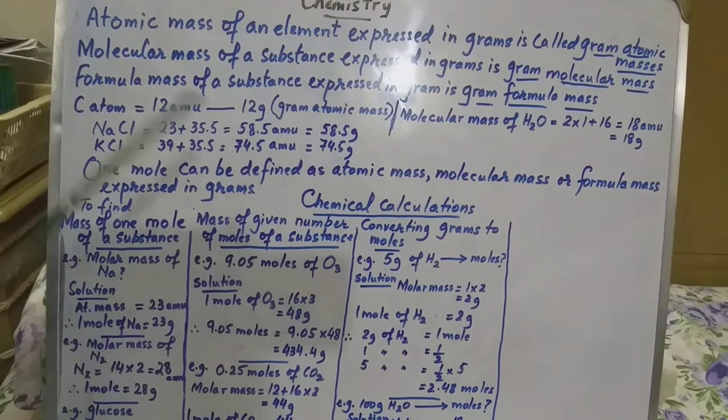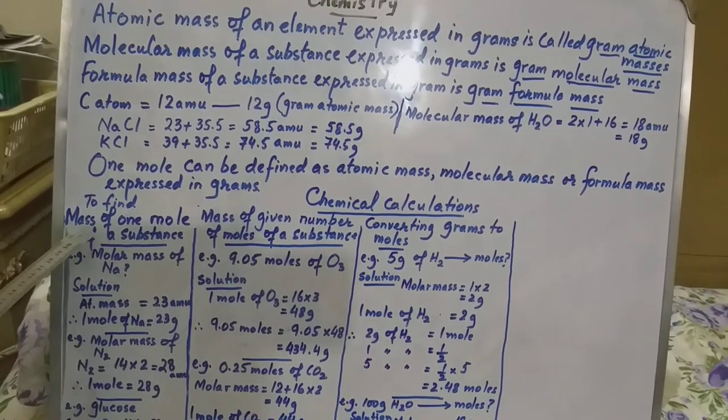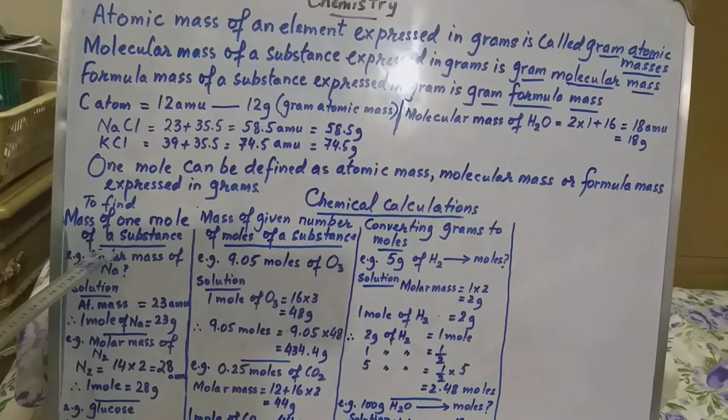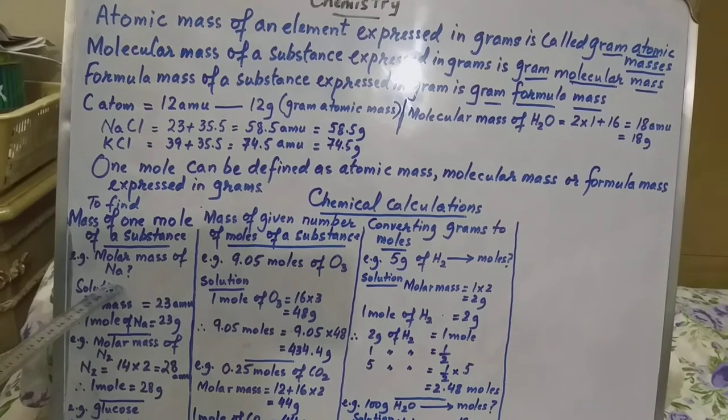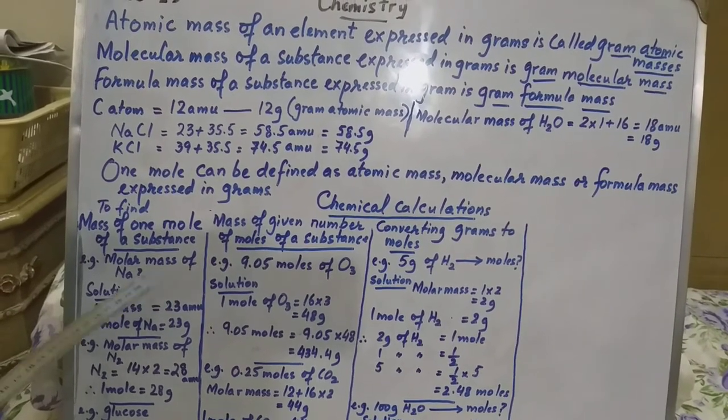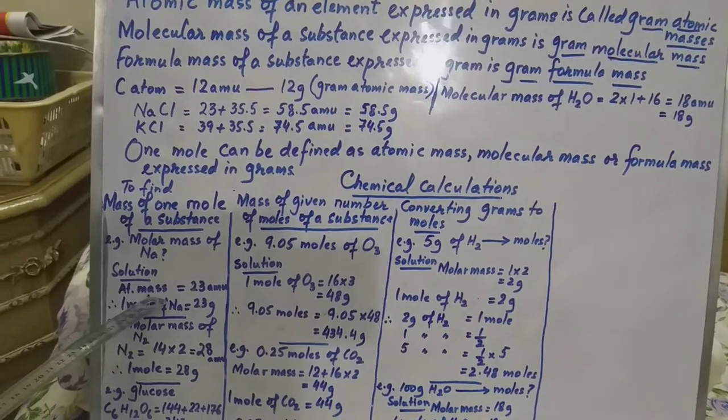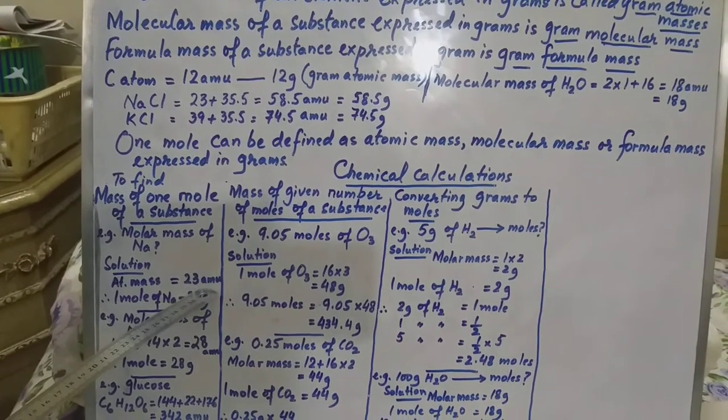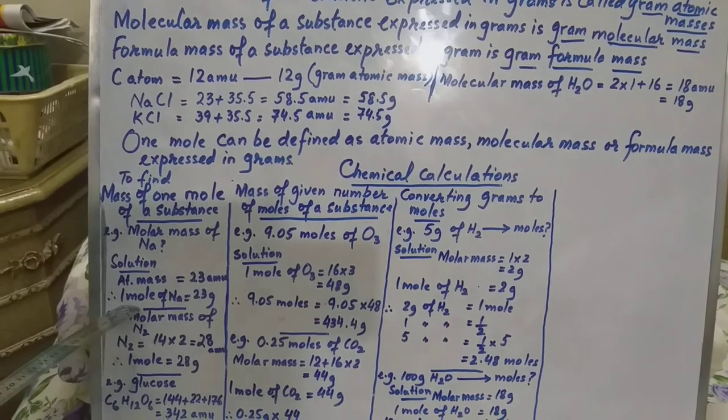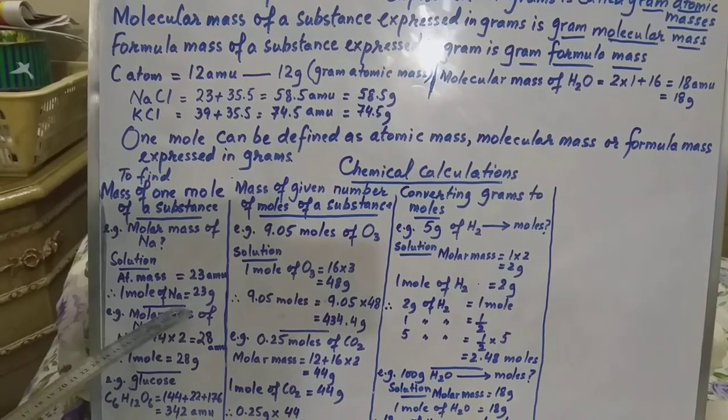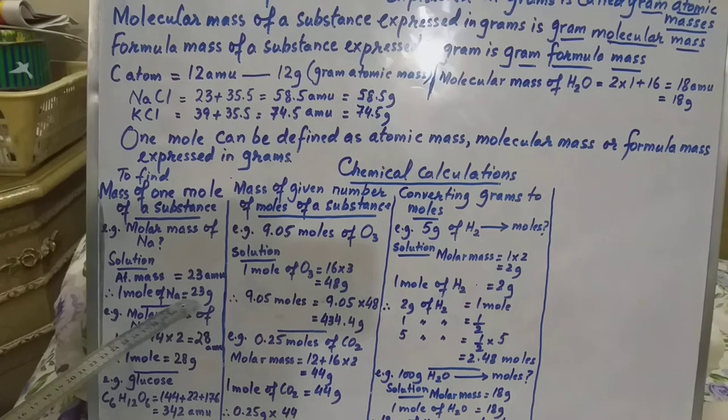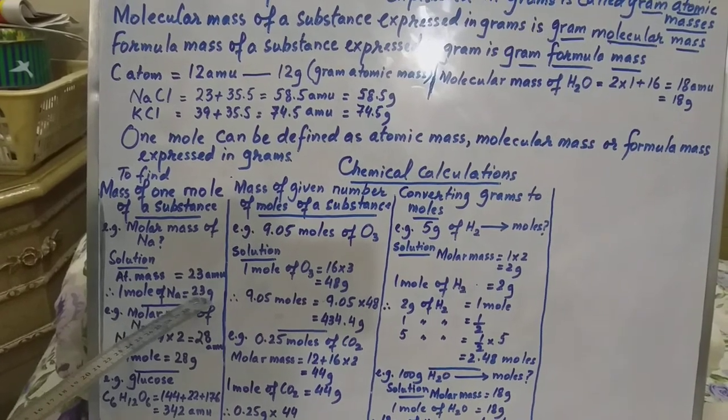Now here we have chemical calculations. We have said that mass of one mole of a substance. For example, sodium mass or molar mass. So this is the solution. We already know that atomic mass is 23, so it is 23 atomic mass unit. It means that this, 1 mole of sodium, if we add it, it is 23 grams.